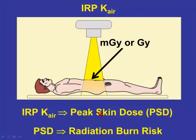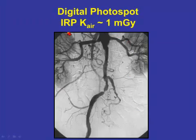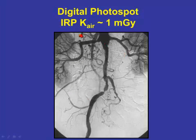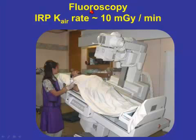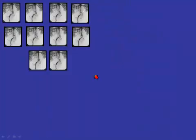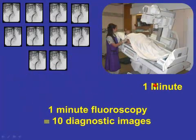But if you want to get the peak skin dose, you have to talk to a medical physicist who will take a number of additional technical factors into account. In terms of typical values, if you take a digital photospot image with your IR imaging system — just one image — the IRP air kerma will be close to 1 milligray. If you put your foot on the pedal and do fluoroscopy, the IRP air kerma rate will be something like 10 milligray per minute, assuming a normal mode of operation and an average sized patient. So 10 photospot images is the equivalent of one minute of fluoroscopic imaging.